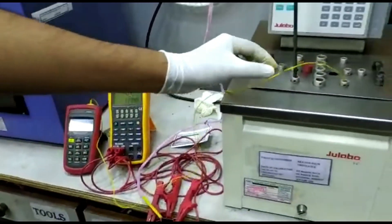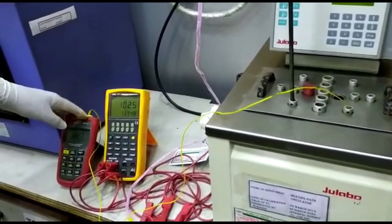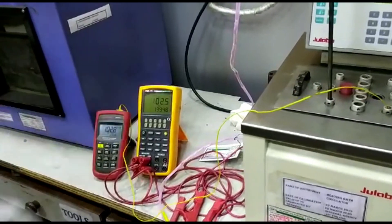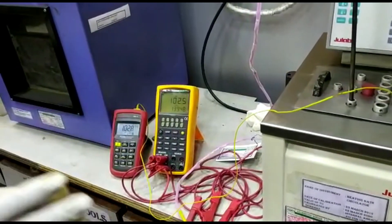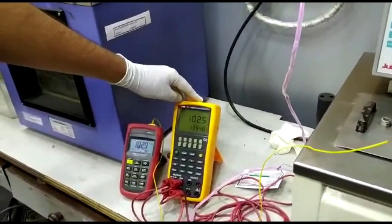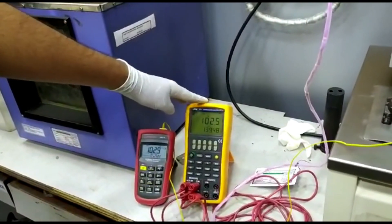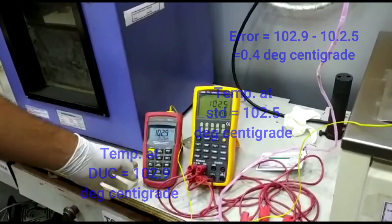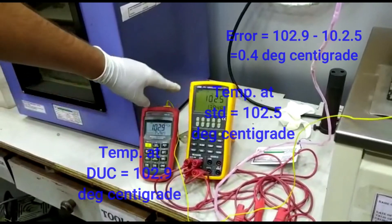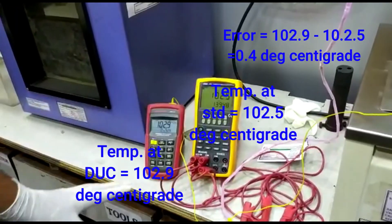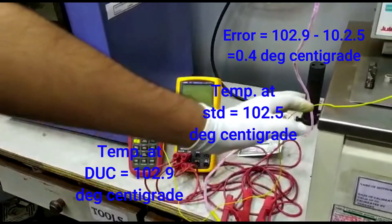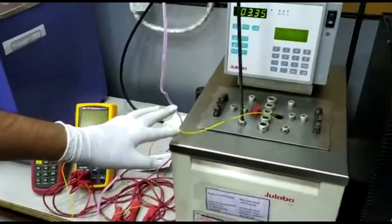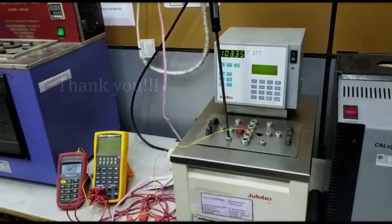DUC means device under calibration. We are calibrating this thermocouple by comparison method. That means we compare the reading of our standard and this DUC to get the error and we are getting the error of 0.4 degree C. That's it. The calibration of thermocouple by using temperature bath and SPRT. Thank you.